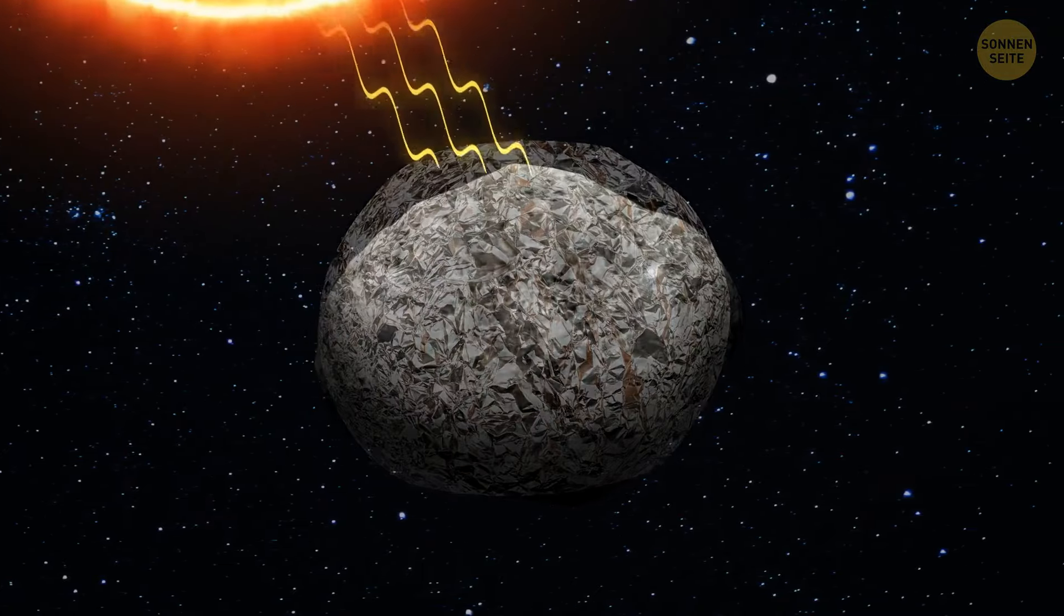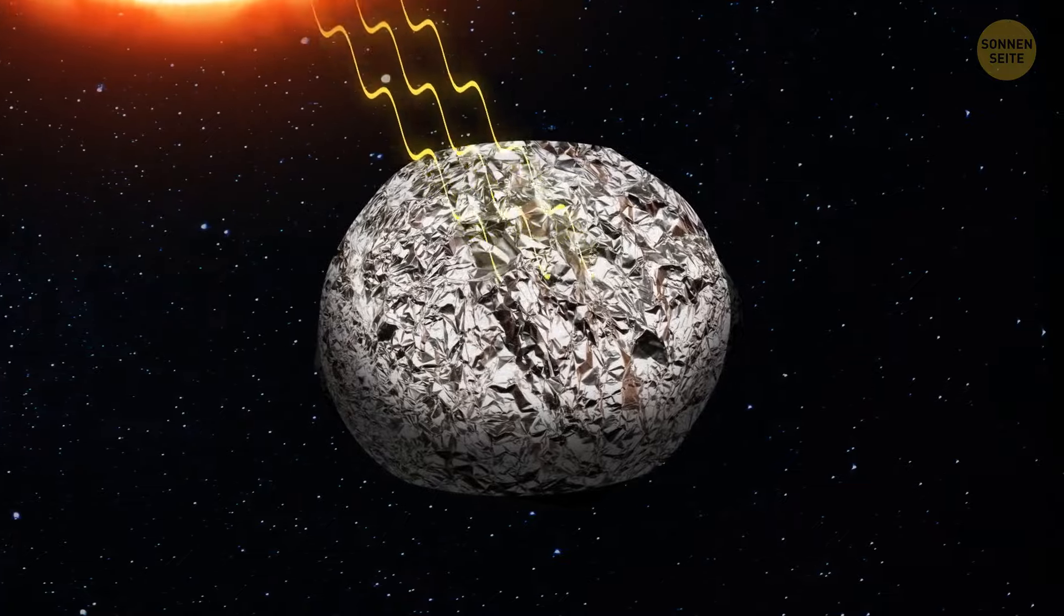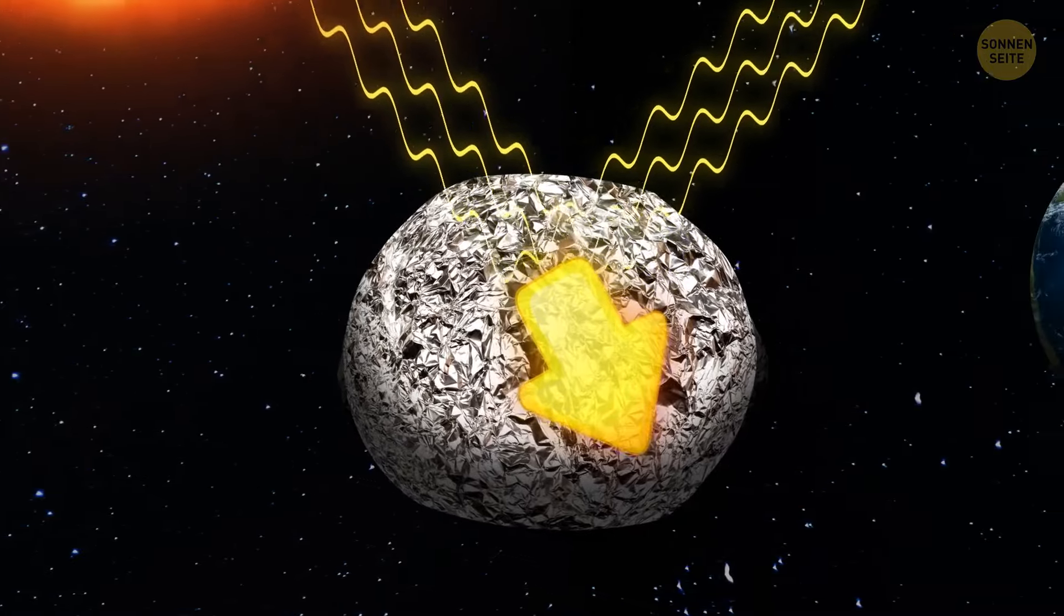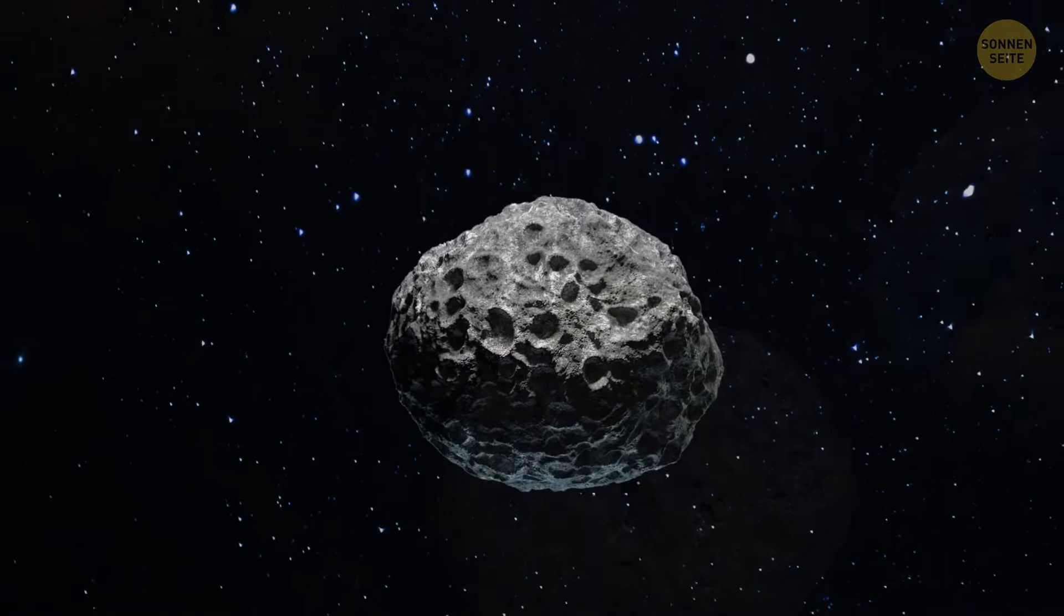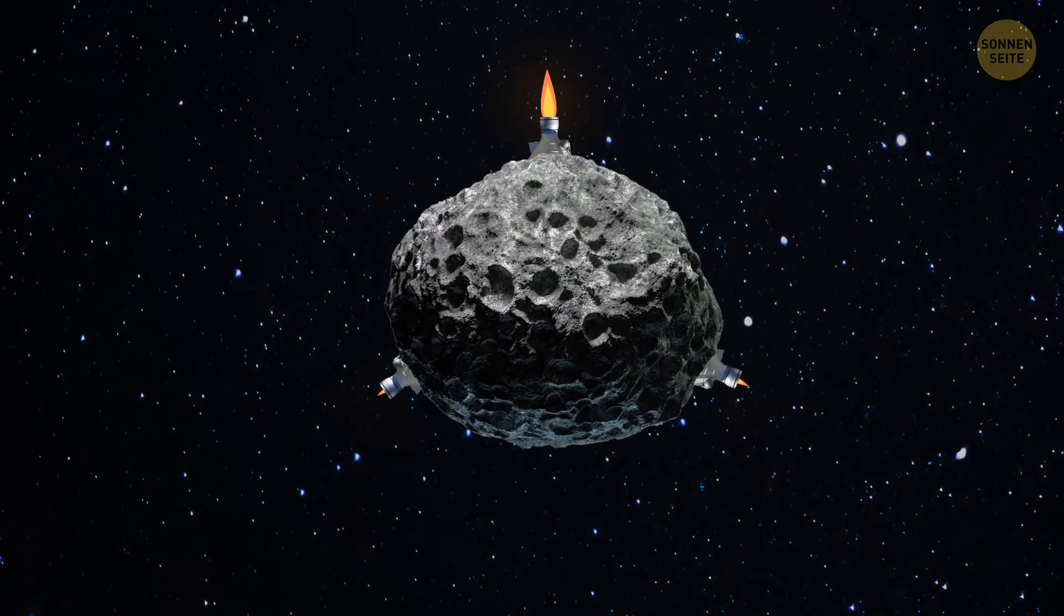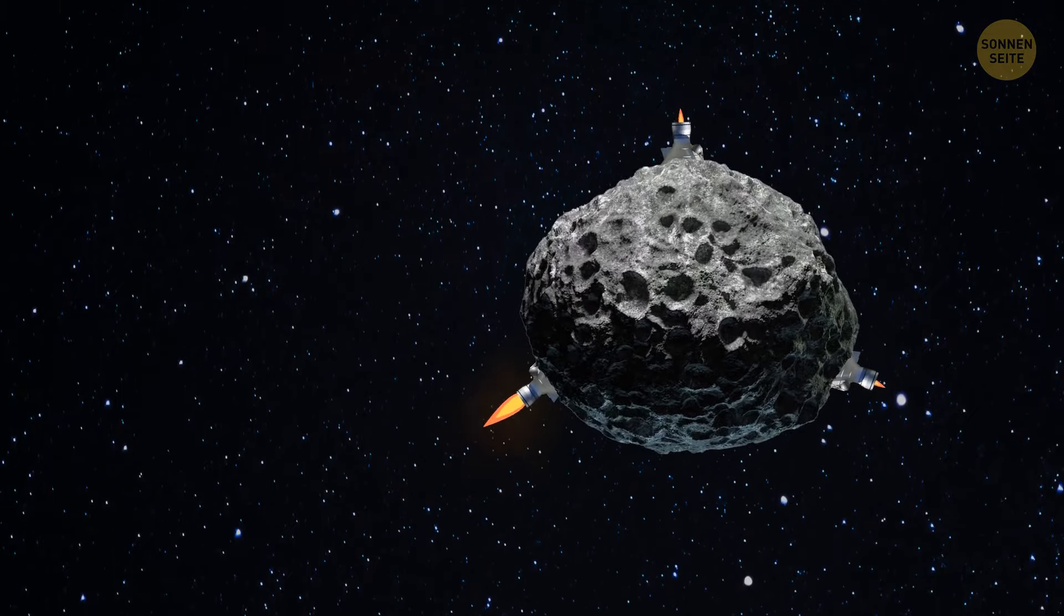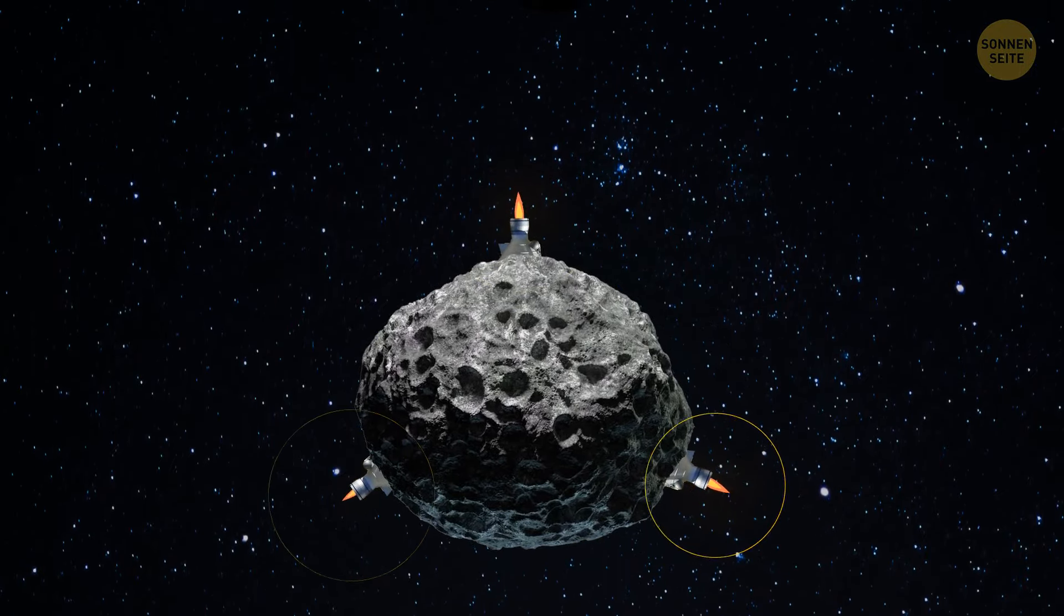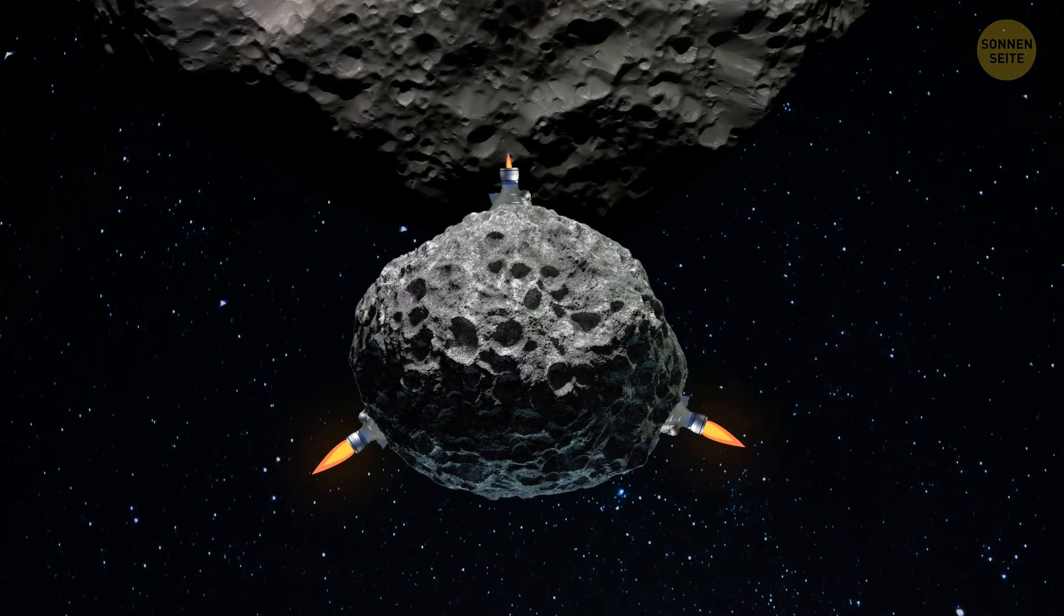We could also wrap the asteroid in a reflective film, something like foil. Usually space bodies absorb most of the sun's rays. But if the asteroid was covered in foil, the rays would bounce off its surface. This would create a weak pushing force. That should be enough to avoid the collision. Of course, we could attach rocket engines to the asteroid. This way, we would be able to not only change its trajectory but also control it. But that would depend on the size of the asteroid and the number of engines. And then we could use this massive rock to ram it into other larger asteroids.